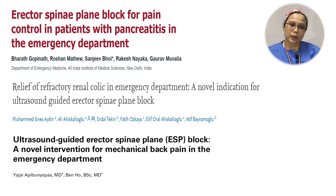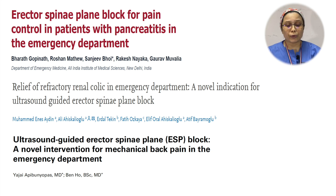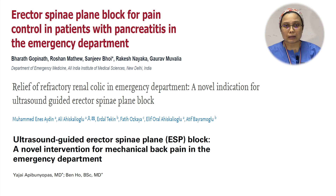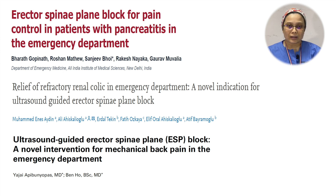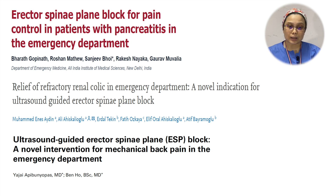Looking at what others around the world are doing, there are a few case series and case reports from Google Scholar. One interesting study is by a group of emergency physicians in India who recruited seven patients with acute pericarditis and gave them a mixture of bupivacaine, lidocaine, and dexamethasone — totalling 30 mLs — injected at T7 level. This study showed a reduction in pain score at different time intervals, fewer side effects, and reduced additional analgesic dose requirements. Another study published in the American Journal of Emergency Medicine by an ED team from Turkey gave ESP block to a patient presenting with renal colic, and the patient had relief from the colic.